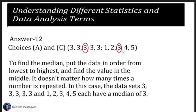To find the median, put the data in order from lowest to highest and find the value in the middle. It does not matter how many times a number is repeated. In this case, the data sets three, three, three, three, three and one, two, three, four, five each have a median of three.